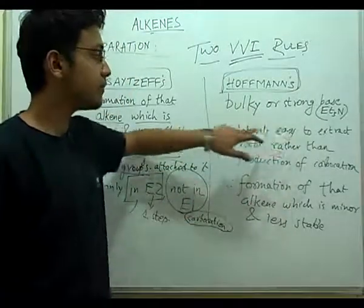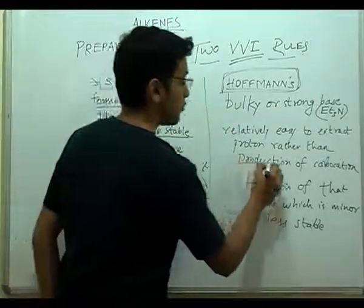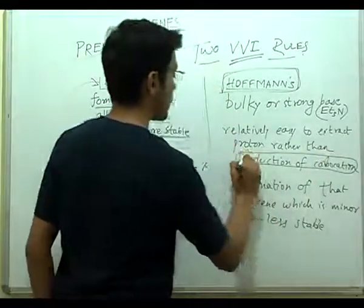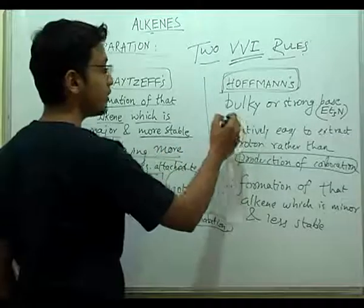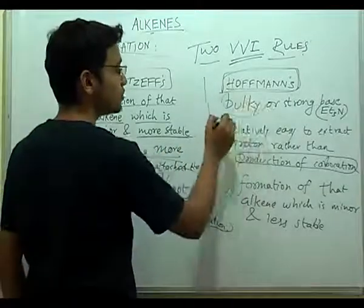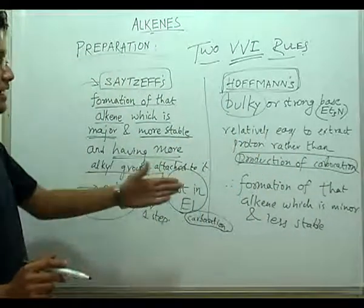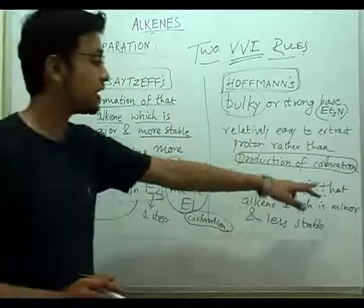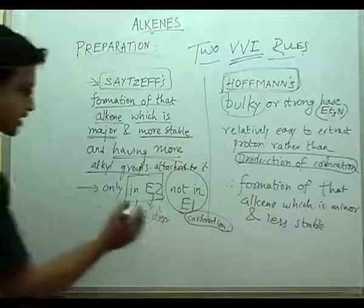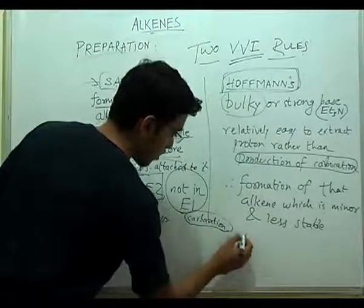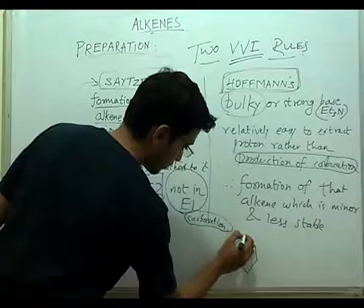With a bulky base, it is much easier to simply extract a proton rather than form a carbocation. If a carbocation were to form, that would be very difficult for a bulky group. So with a bulky base, the proton is extracted more easily, leading to the formation of the less stable, less substituted alkene — the Hofmann product. For example, taking a reaction with one Br substituent and CS3 group.